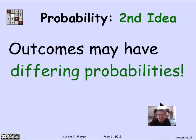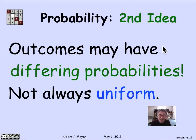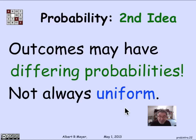The second key idea in probability theory is that outcomes may have differing probabilities — differing weights. Unlike the poker hand case, when we look more closely at a random experiment, we agree that for various reasons of symmetry or logic, it makes sense to assign different probability weights to different outcomes. It's not the case that all outcomes are equally likely.